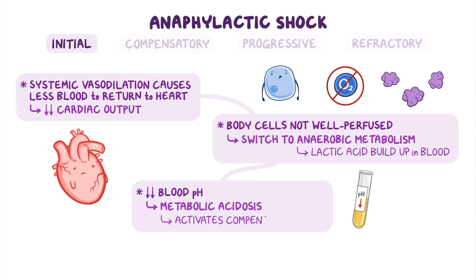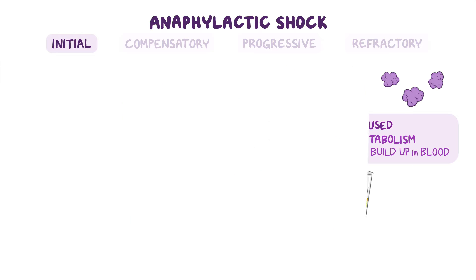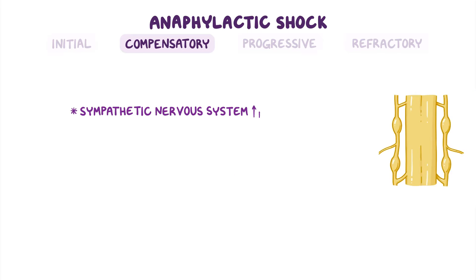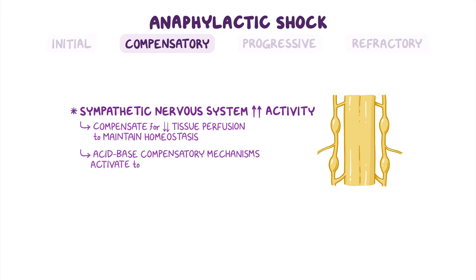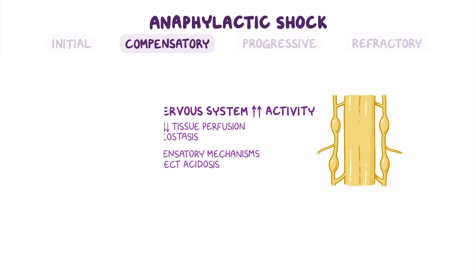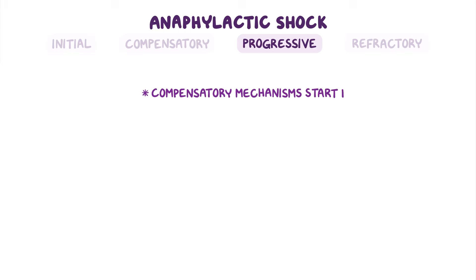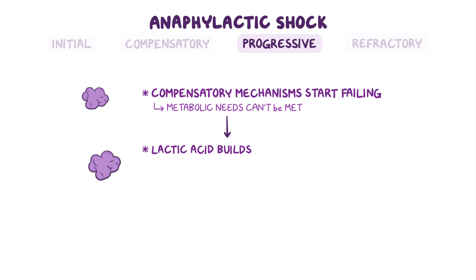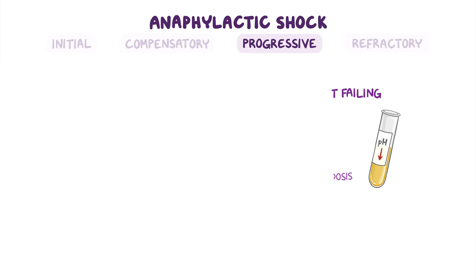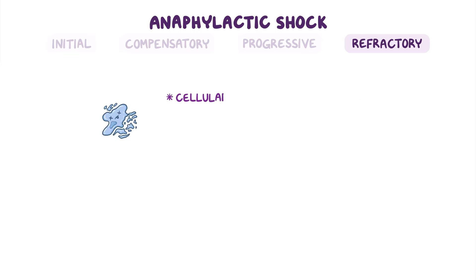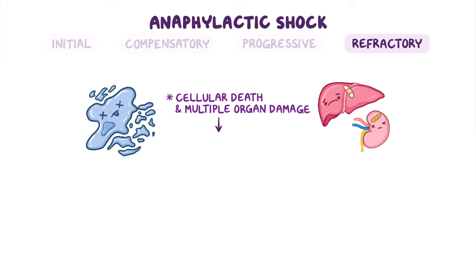This activates the compensatory stage. During the compensatory stage, the sympathetic nervous system increases its activity to compensate for the decreased tissue perfusion in order to maintain homeostasis, and acid-base compensatory mechanisms activate to correct the acidosis. In the progressive stage, these compensatory mechanisms start failing, so the body's metabolic needs can't be met, resulting in lactic acid buildup and gradually worsening metabolic acidosis. Finally, the refractory stage is when shock progresses to cellular death and multiple organ damage, which can be fatal.